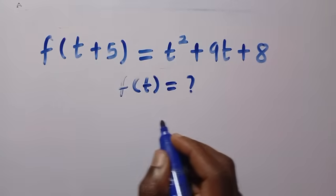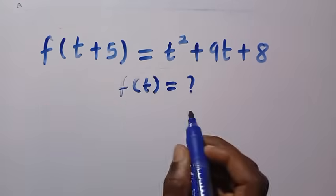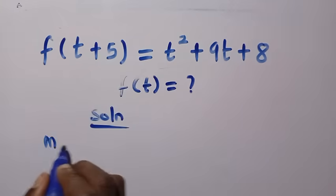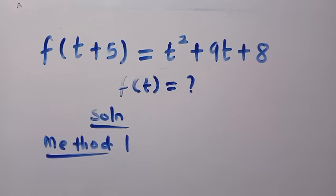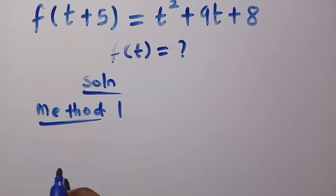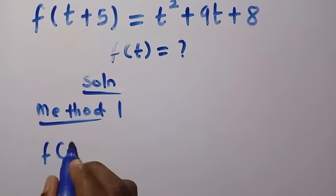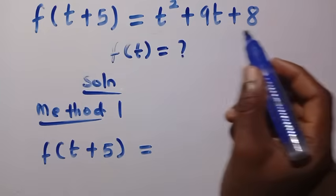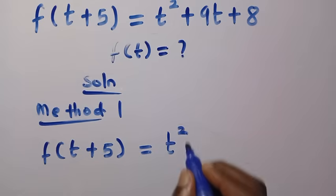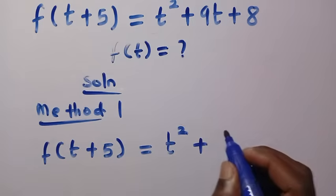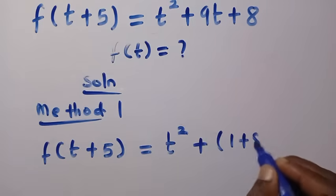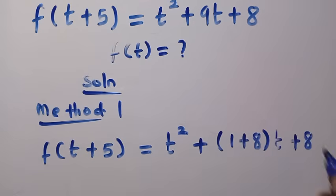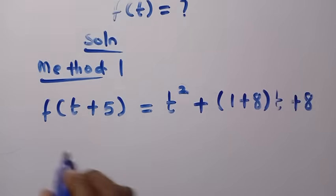We'll solve this using two different methods. Since t is a member of the real numbers, we consider the solution from here. For the first method, looking at the left hand side, which is a quadratic expression, we have f(t+5). Let's factorize t squared plus 9t plus 8 by writing 9 as 1 plus 8.